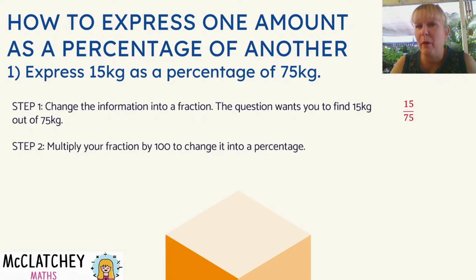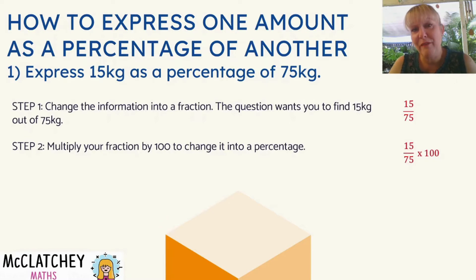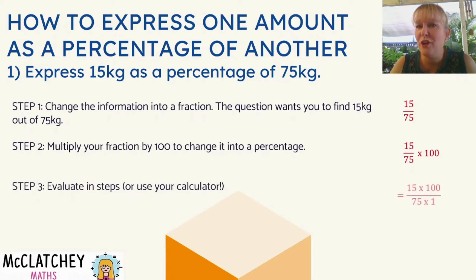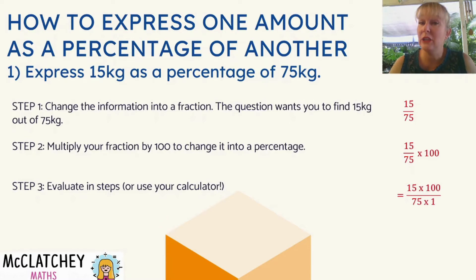We're now going to multiply our fraction by 100 to change it into a percentage. The reason we do this — we've discovered in our previous videos that when we want to change fractions into percentages, we multiply the fraction by 100. Now it's always easier to multiply a fraction by a fraction, so I've actually changed that 100 into 100 over 1 because any whole number is actually a fraction over 1. It makes it a lot easier to simplify your fractions.